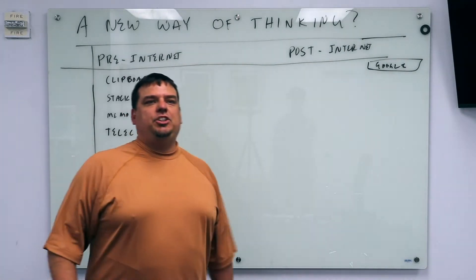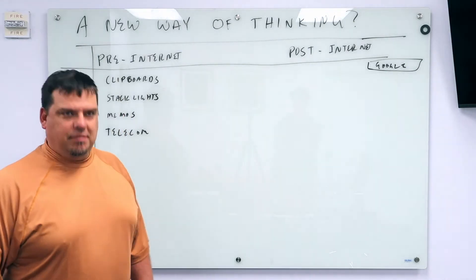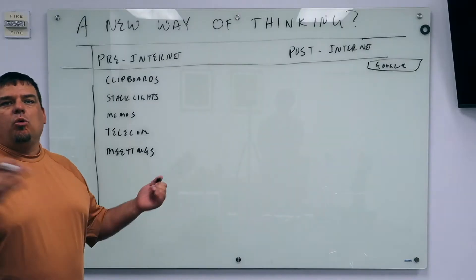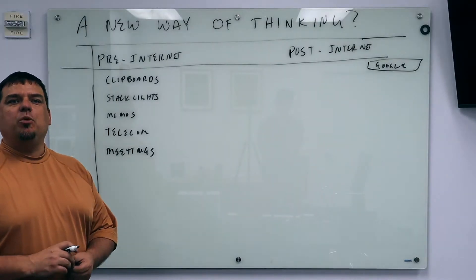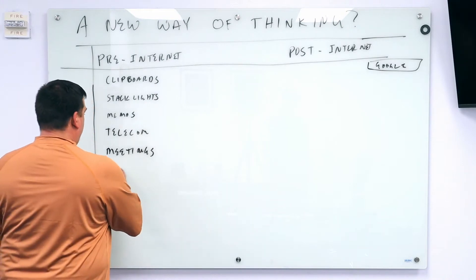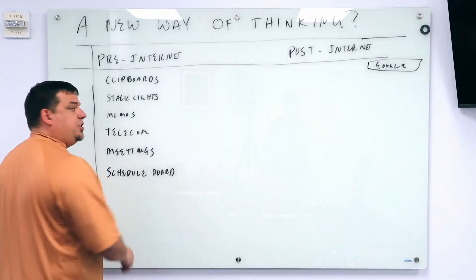How did people share information in a plant? In meetings, conference room meetings. In the pre-internet days, how did you start a work order on a piece of equipment? How did you know what you were supposed to run? You go to a schedule board.